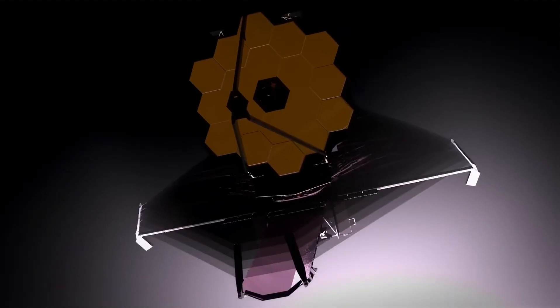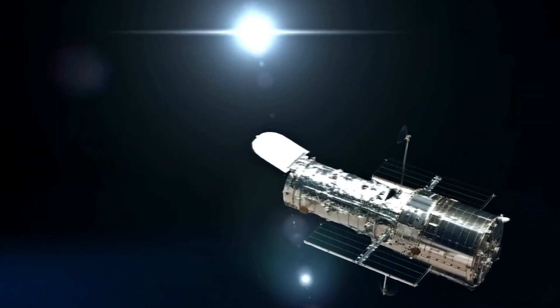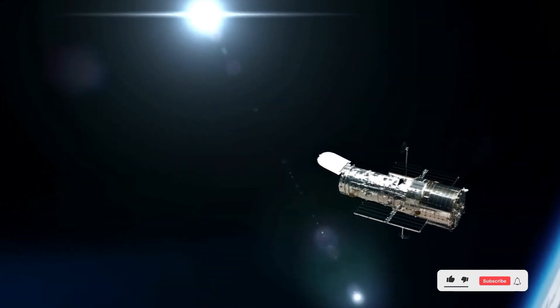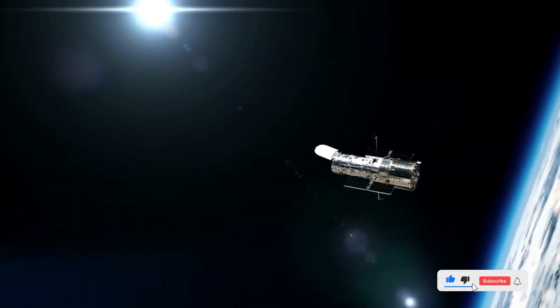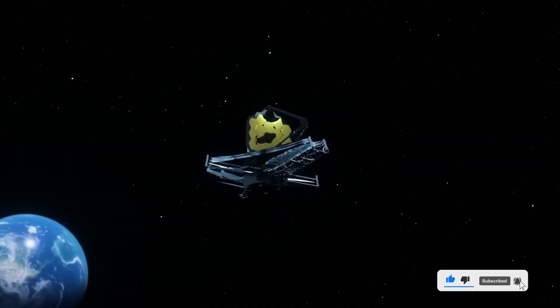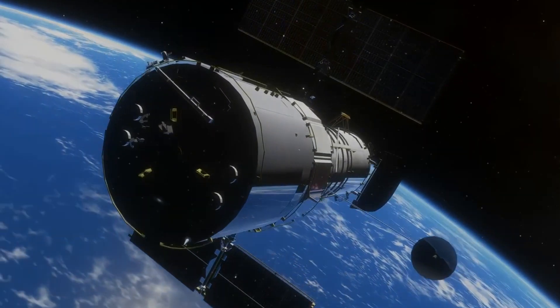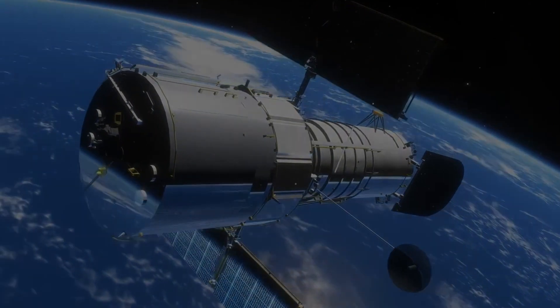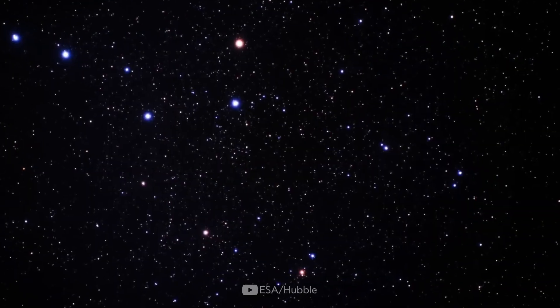Time is a fascinating concept, often likened to a river that can twist, turn, and even loop back on itself. Some scientists even propose that time might be more of a mental construct, and that everything is happening all at once. Today, we'll delve into this idea and explore how the James Webb Telescope can provide insights into the nature of time.